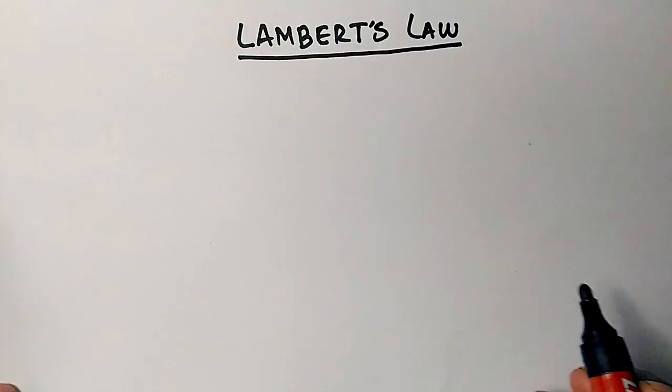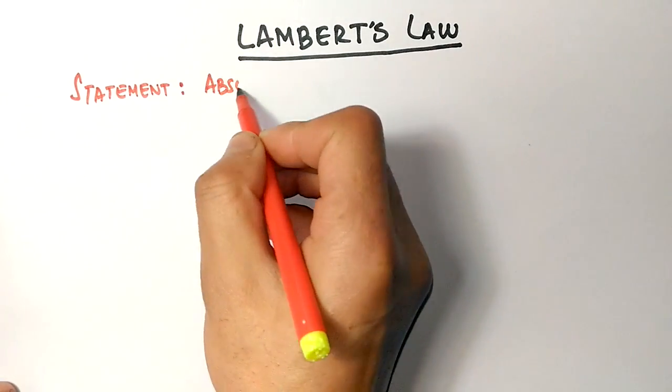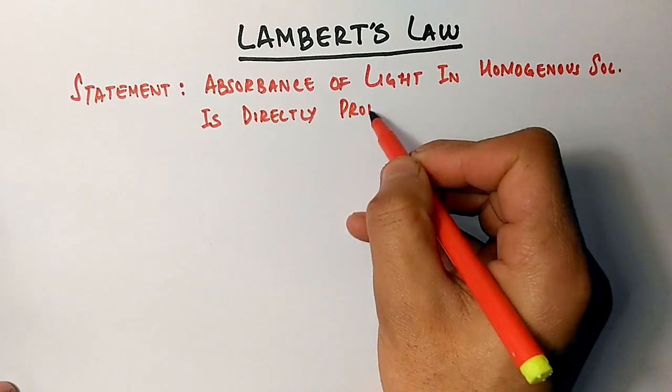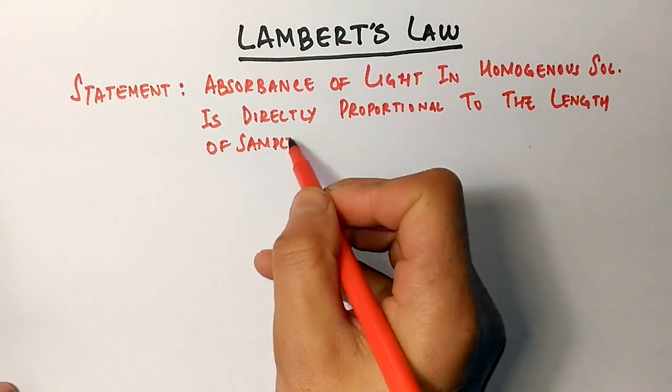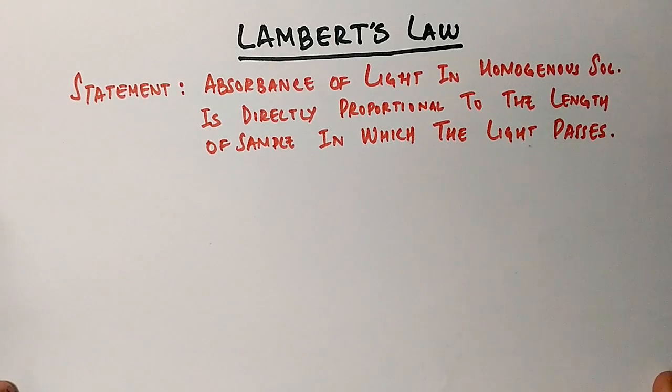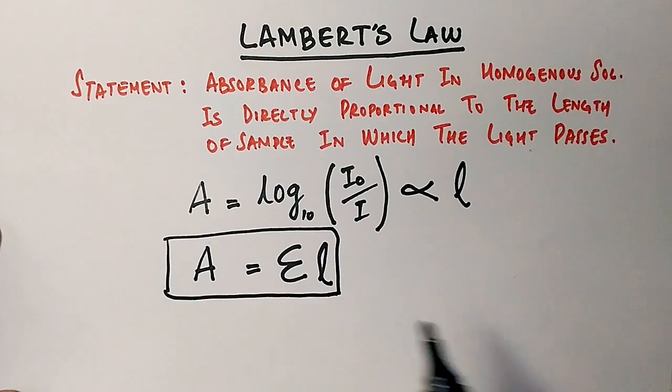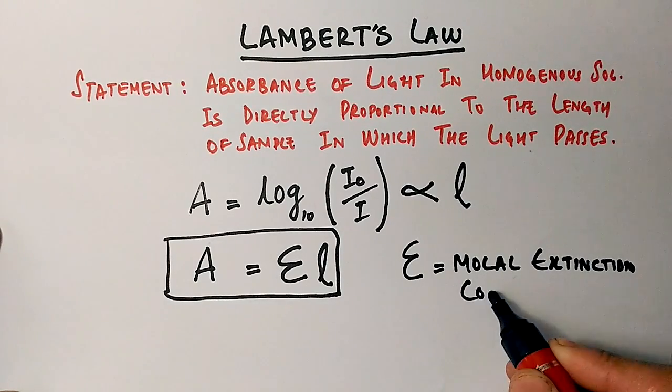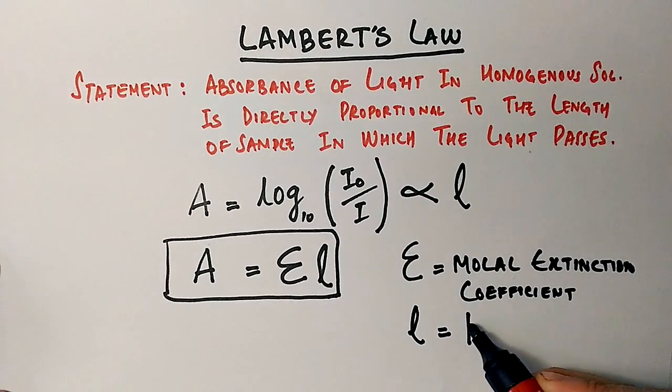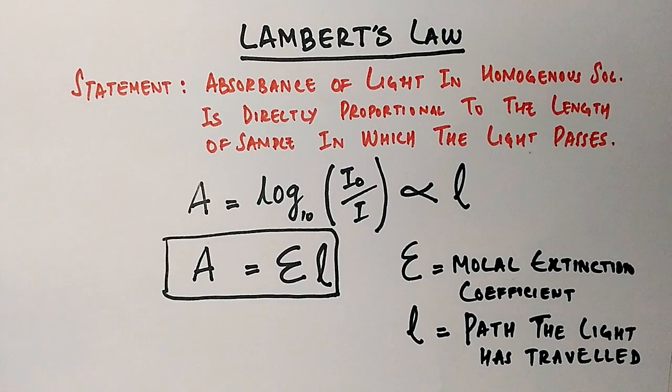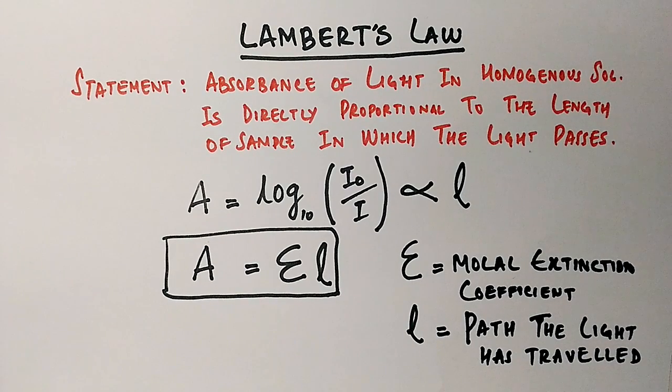Now we will see Lambert's law statement first. Absorbance of light in homogeneous solution is directly proportional to the length of sample in which the light passes, which can be expressed mathematically as log of I₀ by I is directly proportional to L. This proportionality can be converted into equality when we include the constant epsilon, which we call molar extinction coefficient, and mathematically we have Lambert's law which is A equals epsilon L.